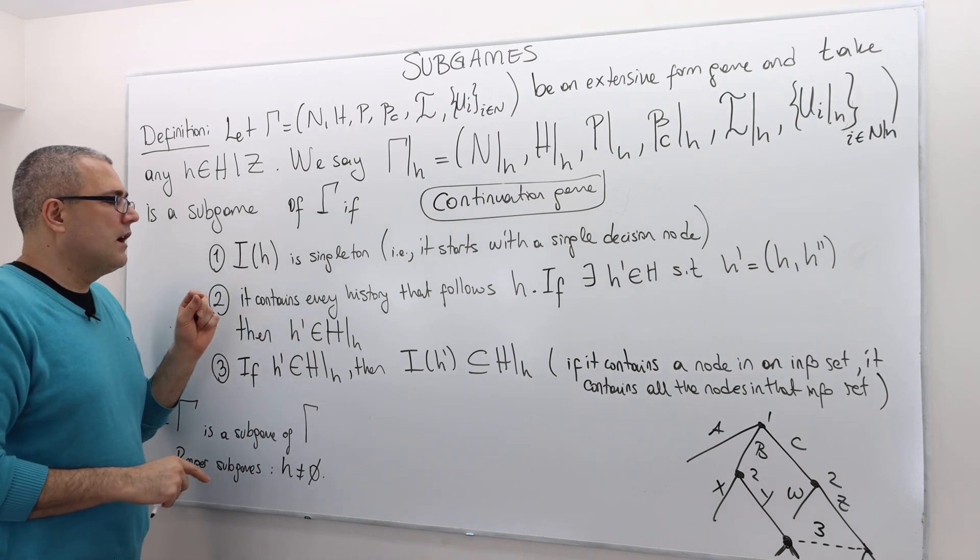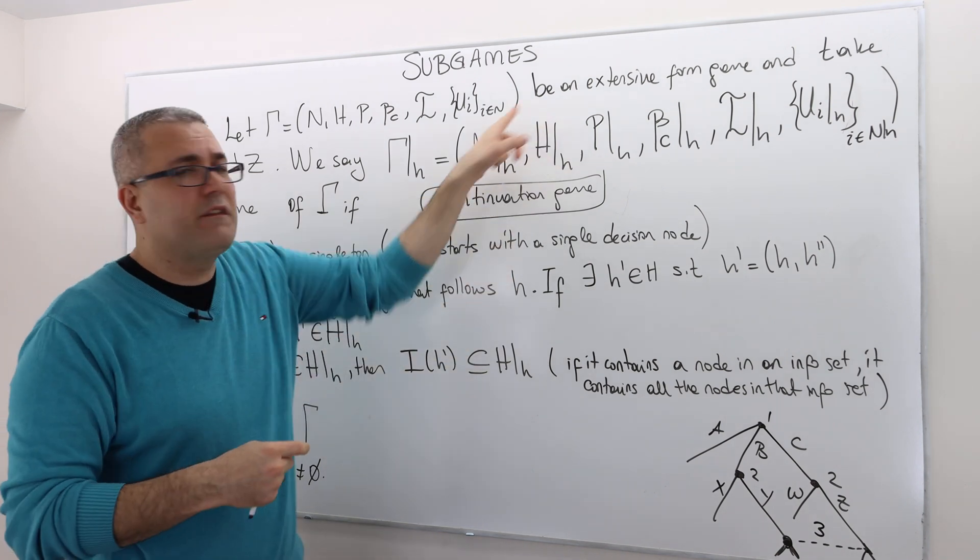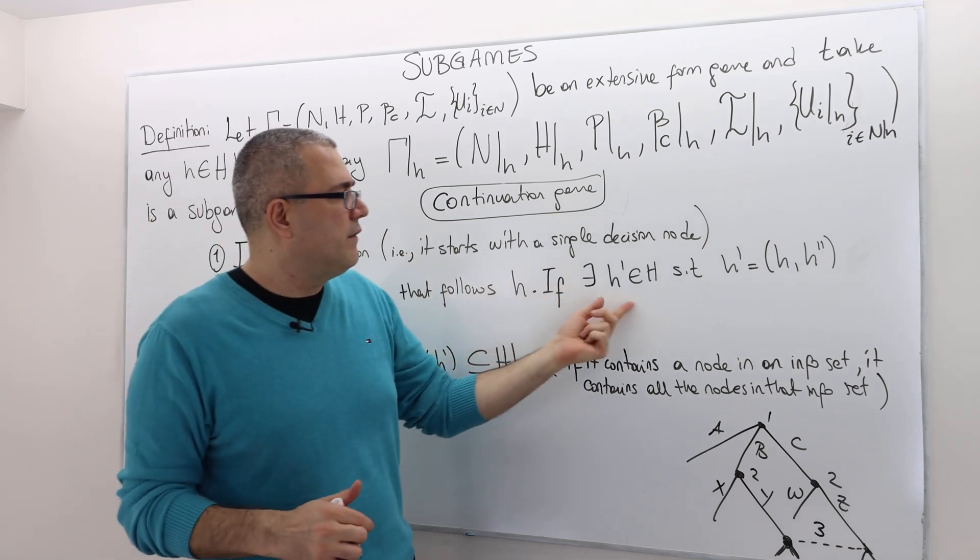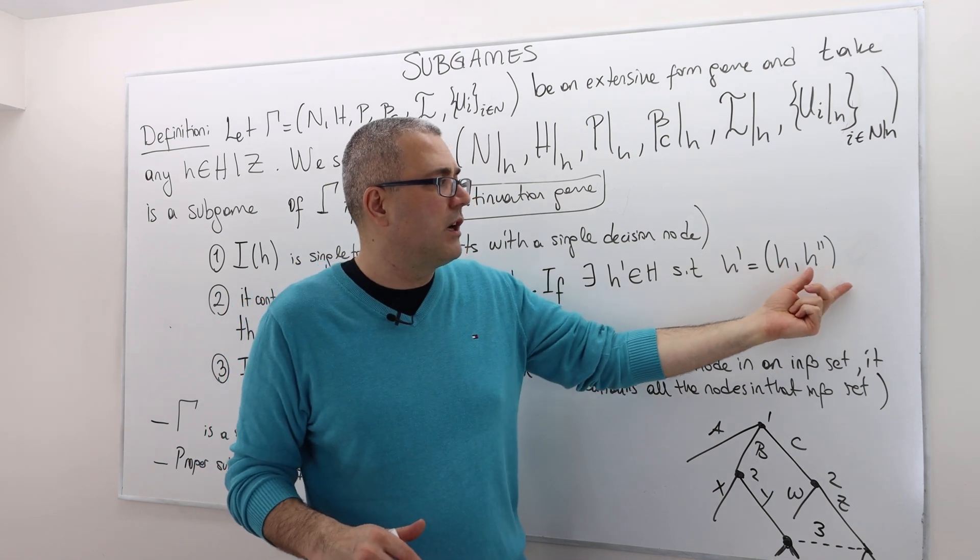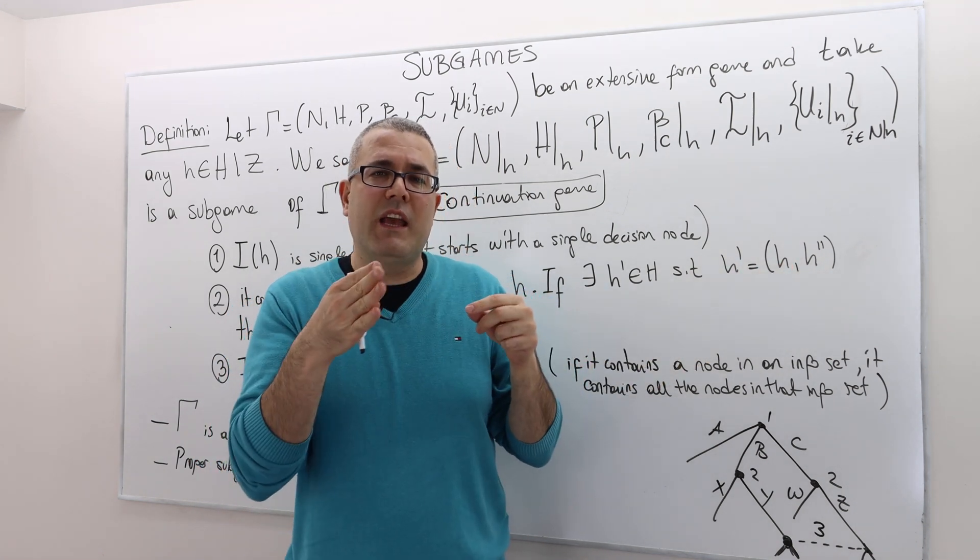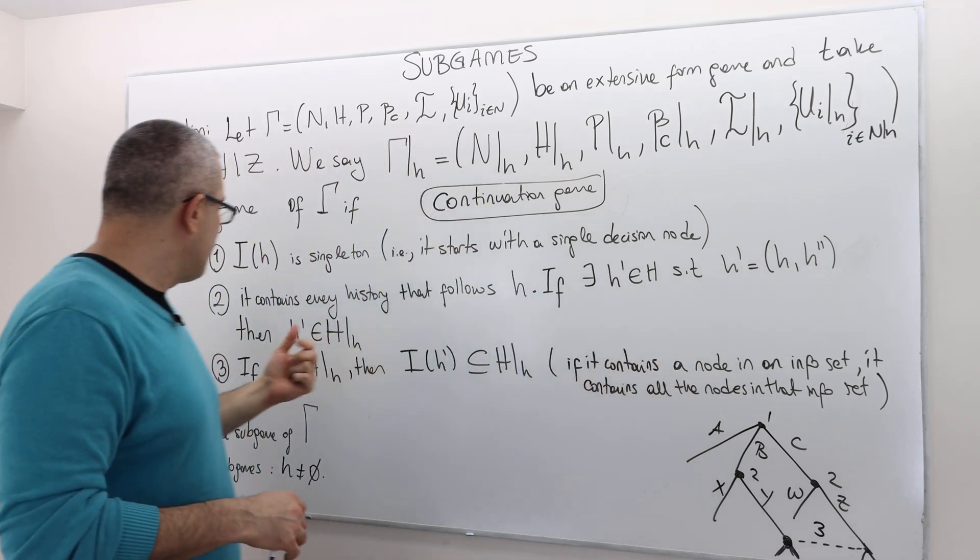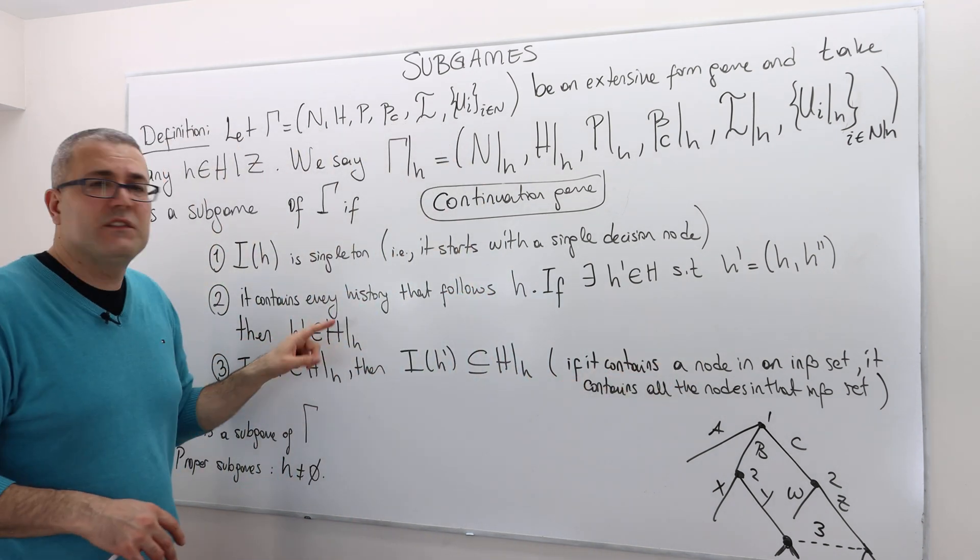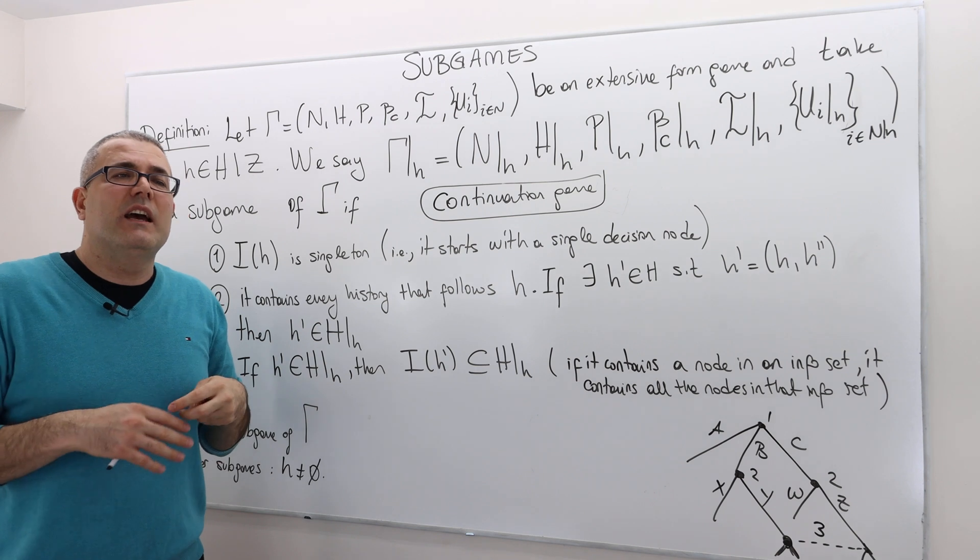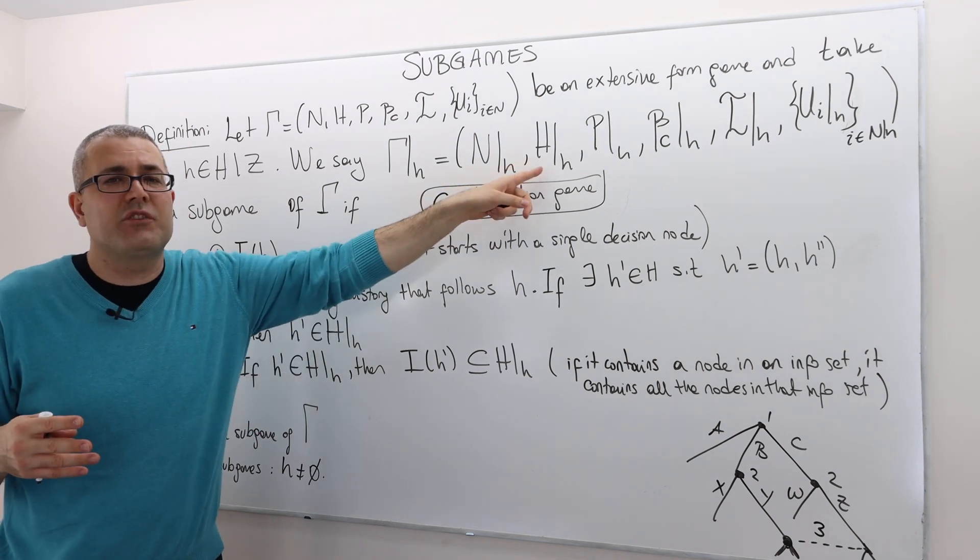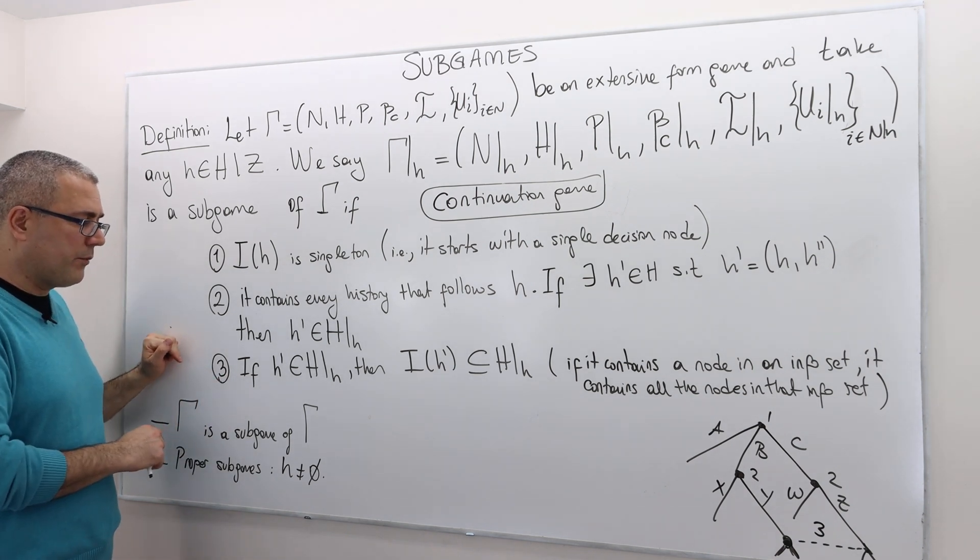What else? It must contain every history that follows H. That's sort of the definition of H slash H. But what does that mean? That means if you have a history H prime, where this history is H comma H double prime, meaning after history H some things happen which is called H double prime, and so this combination is a history. Well, then H prime must be in this set. It's like, this is the description of H slash H. You cannot ignore any history in this set. So remember the description of this set.